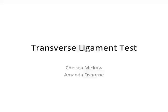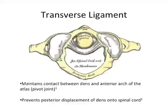The transverse ligament test, by Chelsea Mikko and Amanda Osborne. The transverse ligament maintains contact between the dens and the anterior arch of the atlas, creating a pivot joint.